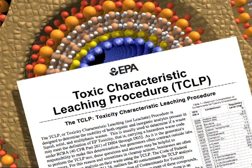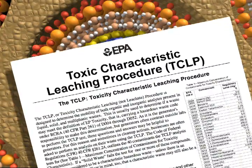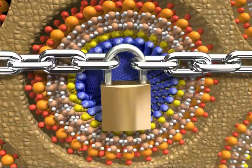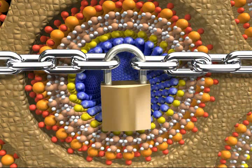The EPA's Toxic Characteristic Leaching Procedure, or TCLP, showed that mercury bound by this sorbent cannot be released into the environment.